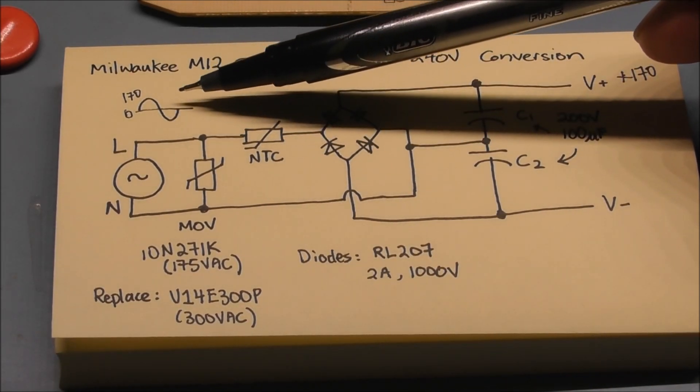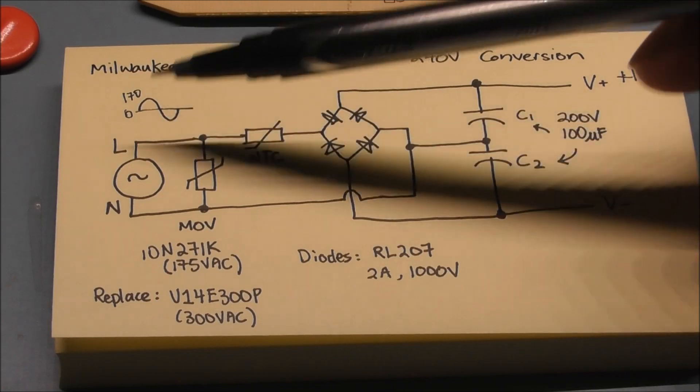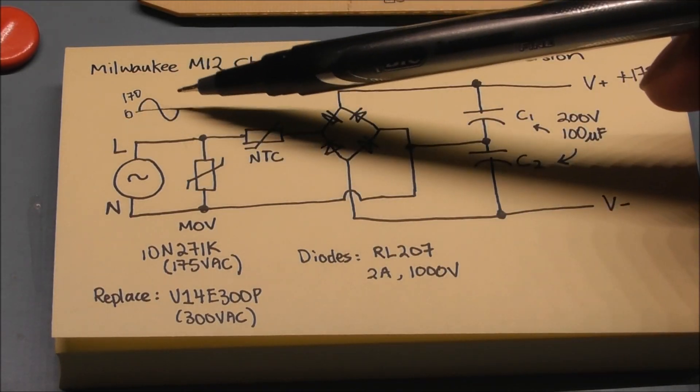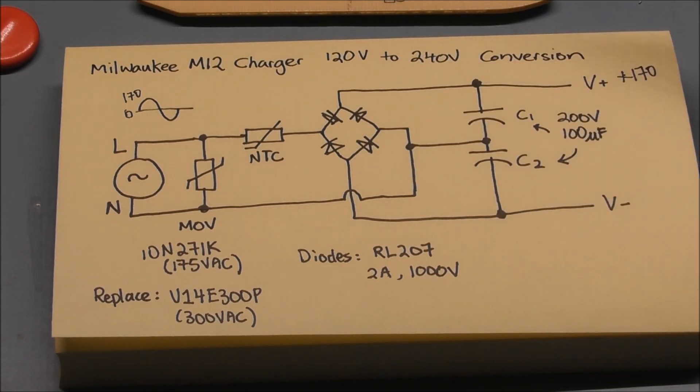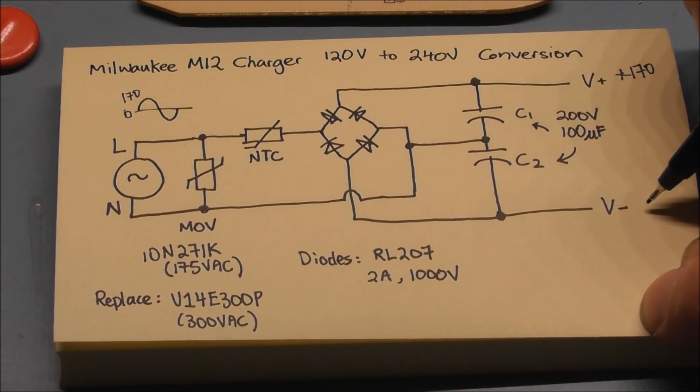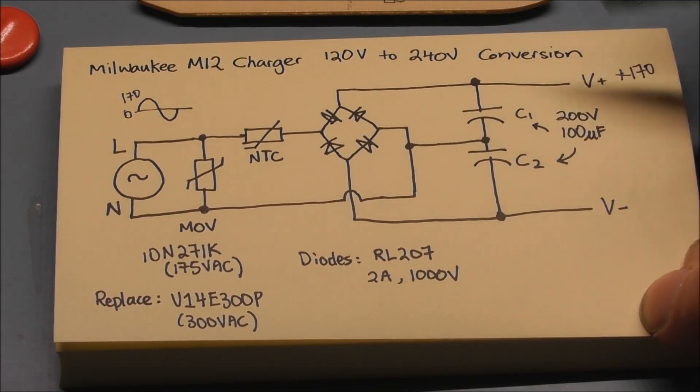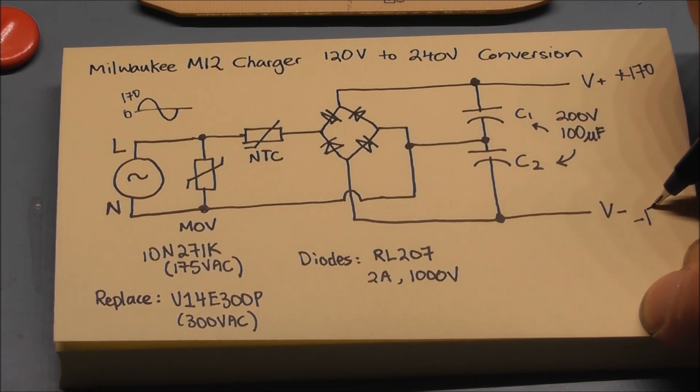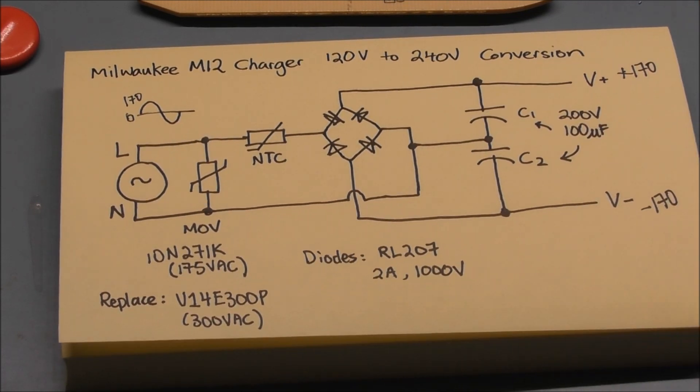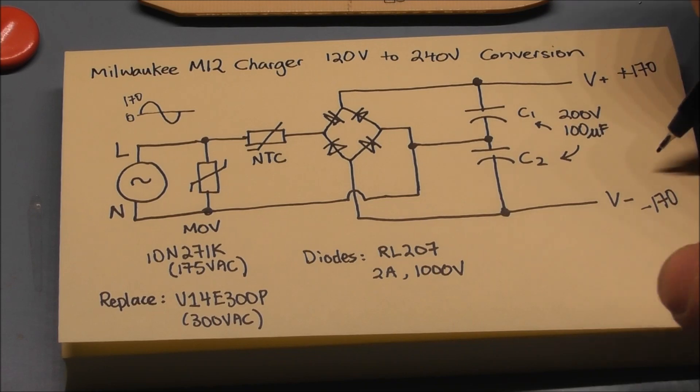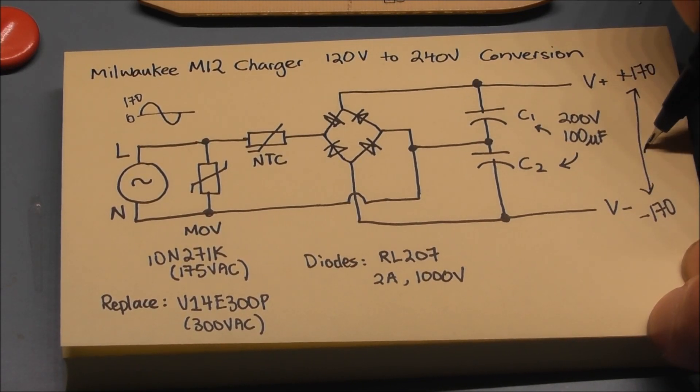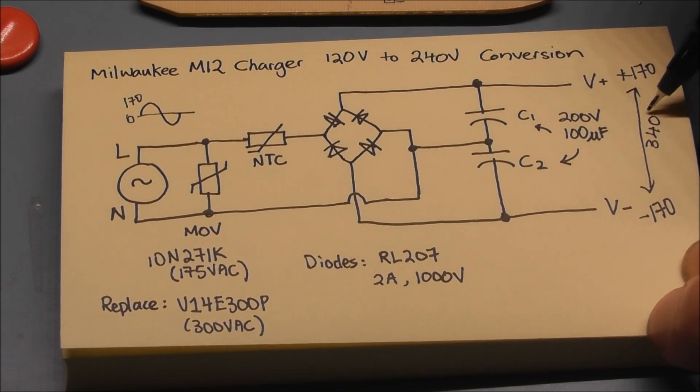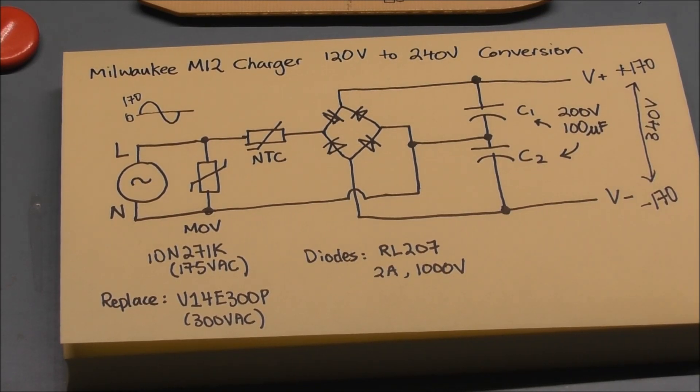Now on the second half of the cycle, when the voltage of the live line is negative with respect to neutral, then current flows in the other direction and V- with respect to this point, which is neutral, will be at a negative 170 volt potential. So the potential difference between V- and V+ will be about 340 volts DC.